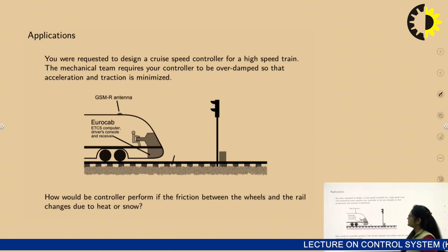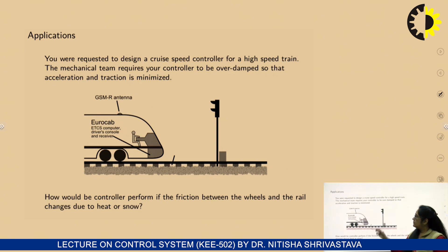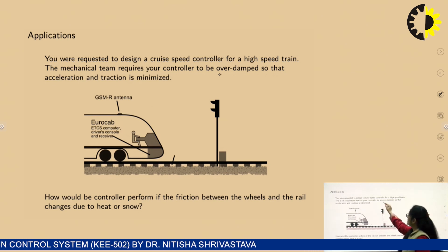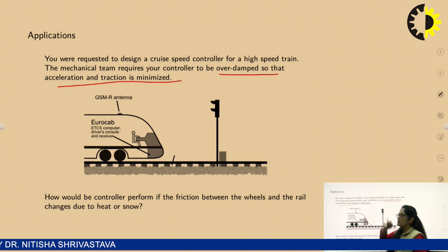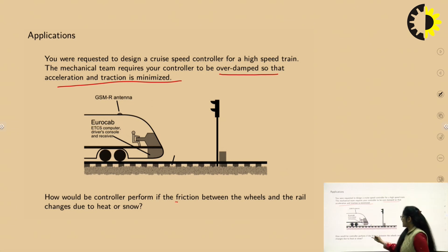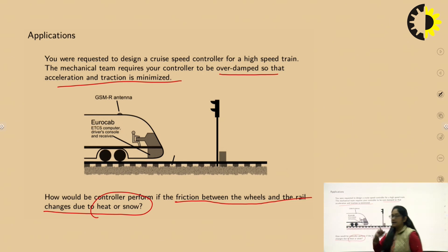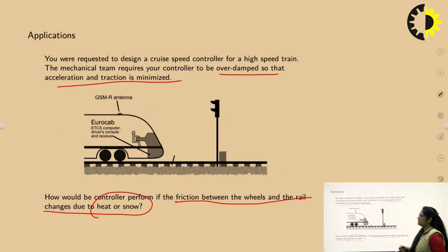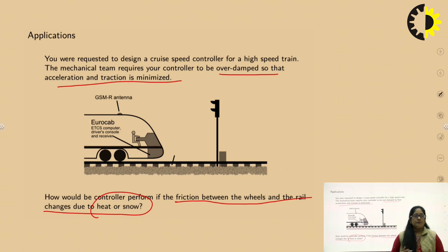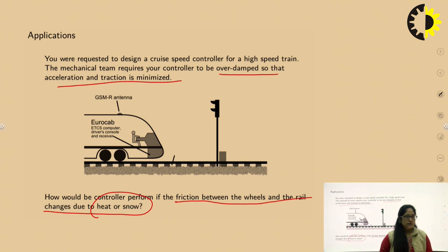Another example: you are requested to design a cruise speed controller for a high speed train. The mechanical team requires your controller to be overdamped so that the acceleration and traction is minimized. Now, if there is a change in the friction between the wheels and the rail due to heat or snow, whenever a control system is designed, there is a possibility that some parameter would keep on changing. So, instead of analyzing the stability each time the parameter changes, we use root locus.